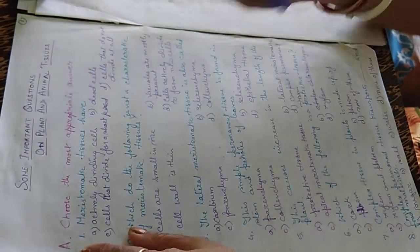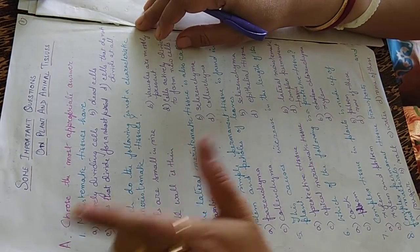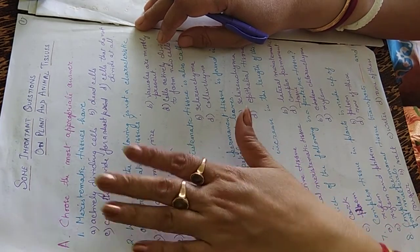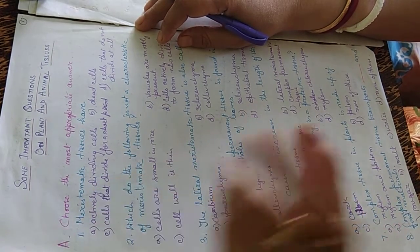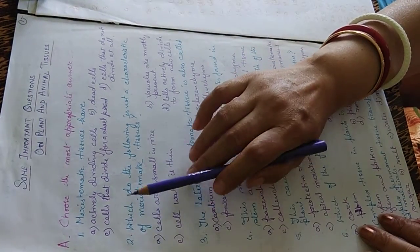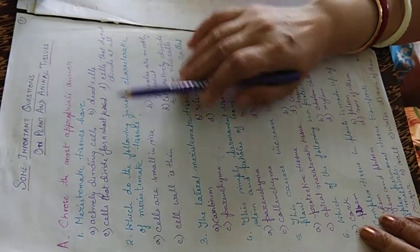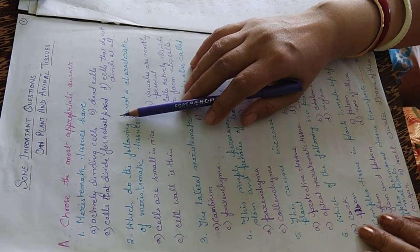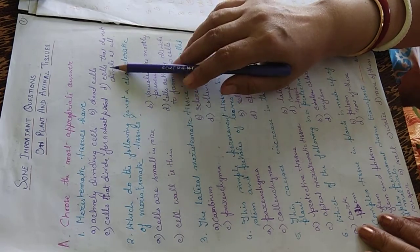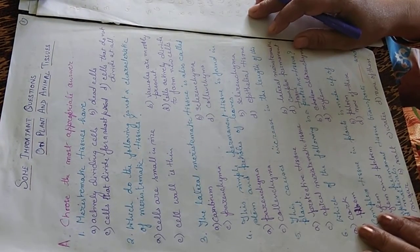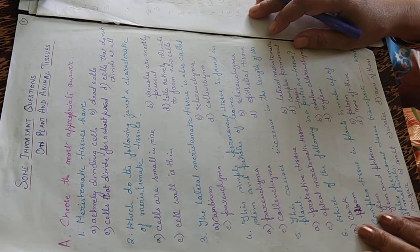This is the first question. Choose the most appropriate answers. Meristematic tissues have: actively dividing cells, dead cells, cells that divide for a shorter period, or cells that do not divide at all. The answer is A — actively dividing cells.